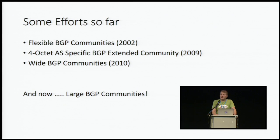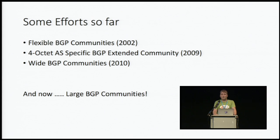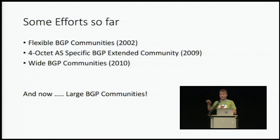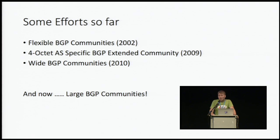Looking back at what has been done so far in the IETF: in 2002 there was an effort started called flexible BGP communities. It was a very interesting idea where you could use BGP communities of flexible length and use them to target certain classes of BGP peers. It was truly fascinating technology, but it was somewhat complicated and it never really picked up steam — the drafts expired.